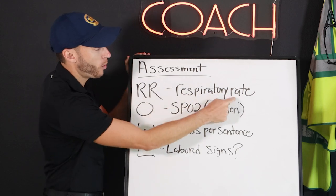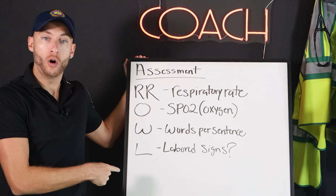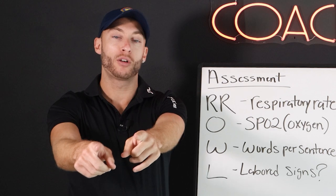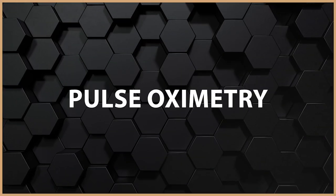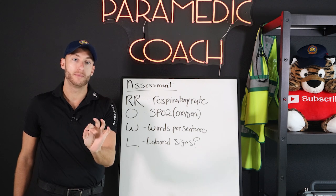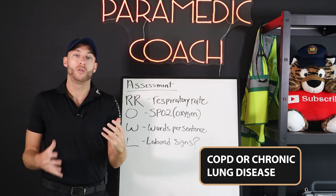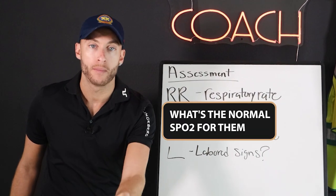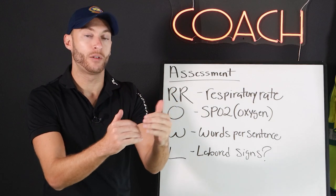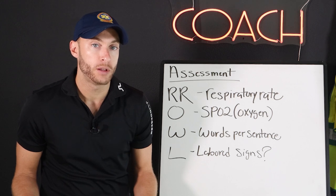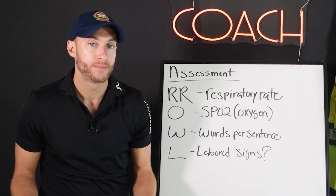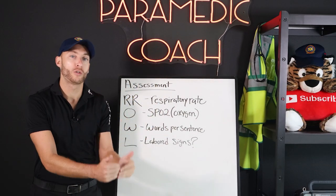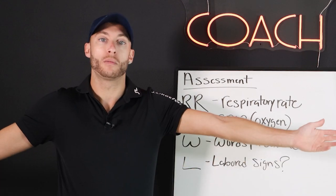RR stands for respiratory rate — what is the patient's respiratory rate? O is for oxygen — what is the patient's SpO2? Bonus tip on pulse oximetry: if you have a patient with COPD or chronic lung disease, ask them and their family what their normal SpO2 is, and titrate oxygen to that level. 94% might be good for someone with COPD — get them back to their normal, not blasting up to 99%.